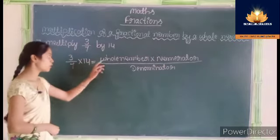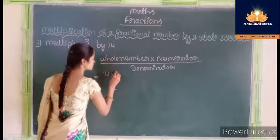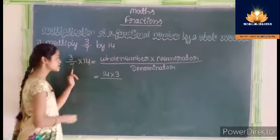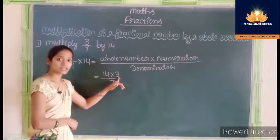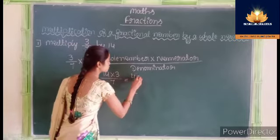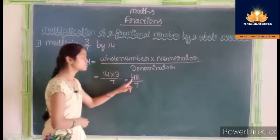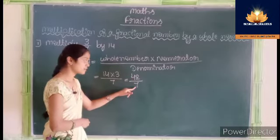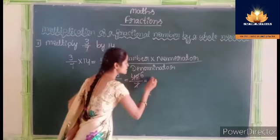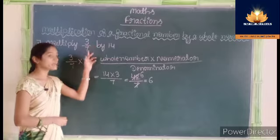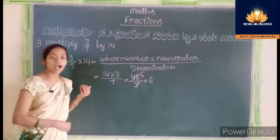Here the whole number is 14. Write 14 in whole number, then numerator that is 3, then denominator that is 7. Now multiply 14 into 3, that is 42. Write 42 by 7. 42 is exactly divisible by 7, giving 6. We get 6 as a product when we multiply 3 upon 7 by 14. Like this, we can multiply a fractional number by a whole number.